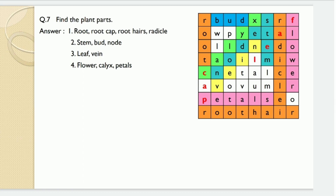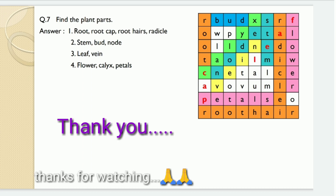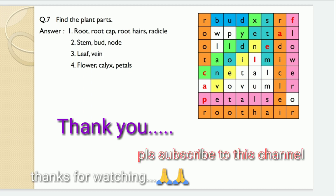Now let us see the last question, question number 7. This is just like a puzzle — you have to find out the parts of plants from the table. Random letters are given and from that you have to find the parts of plants. The parts given include: root, root cap, root hairs, radicle — related to root. Then for stem: stem, bud, node. Parts of leaf: leaf and vein. Parts of flower: flower, calyx, petals, etc. This is all about the exercise. Do you understand all these answers? Very good. Thank you and bye.